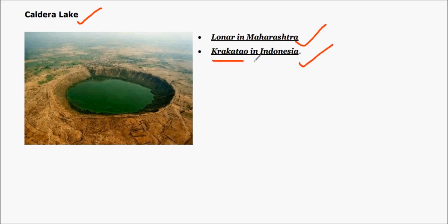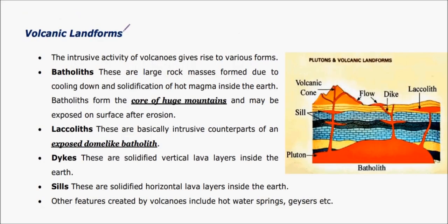Volcanoes give rise to various kinds of shapes and substances when the lava or magma cools within the surface or above the surface. These are called laccolith, batholith, dike, and sill. These are the major volcanic landforms.